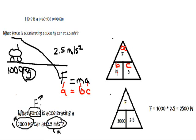So the way these work is if I'm looking for this letter then I would divide these two. If I'm looking for this corner I would divide these two. And if I'm looking for the force I just multiply the ones on the bottom.